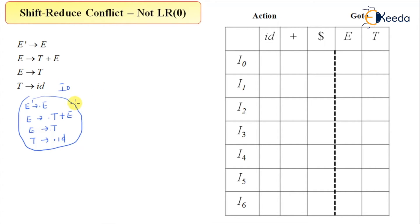Now on input E this will become E prime derives E dot, and this is I1. On input T, E derives T dot plus E for one T, and there's another T so I will not create a new state, T dot, and that state I will call it as I2. On input id this will become T derives id dot and I will call that as I3.